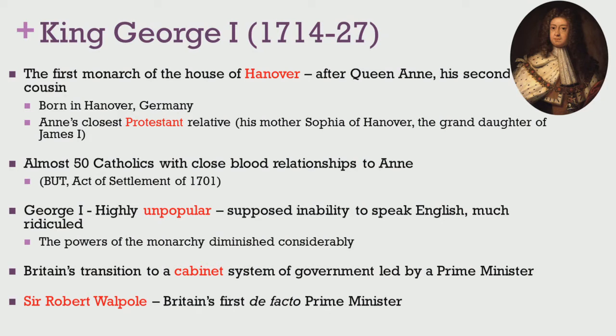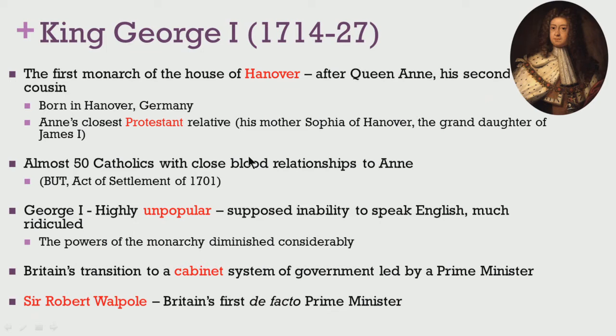It is also said that there were about 50 Catholics during that time with close blood relationships to Anne. However, the act of settlement of 1701 had prevented the ascension of any Catholic as the British monarch. This had led the line of lineage to be traced until George I, who was born and brought up in Hanover in Germany. George I was highly unpopular with the British public and Parliament, mainly due to his supposed inability to speak English, though later historians do show evidence of his knowledge of the language.